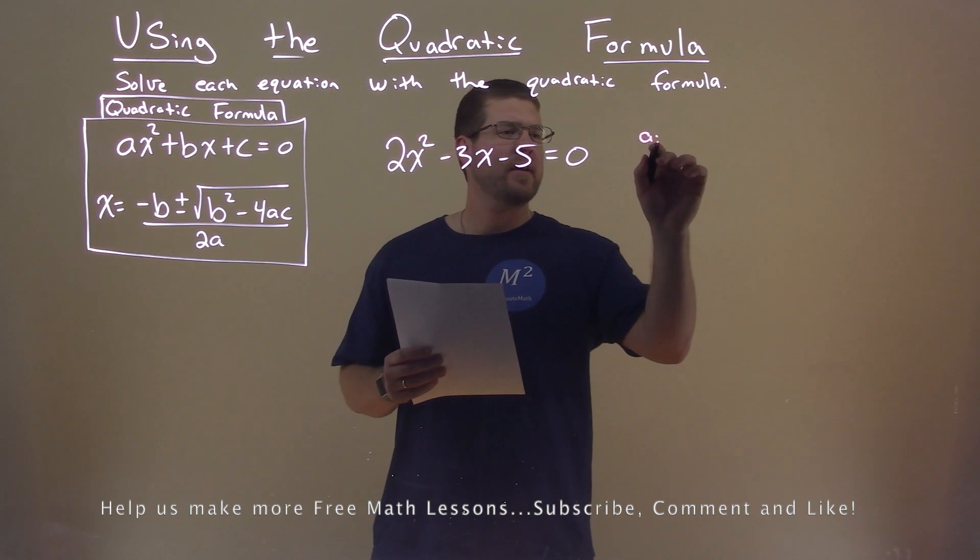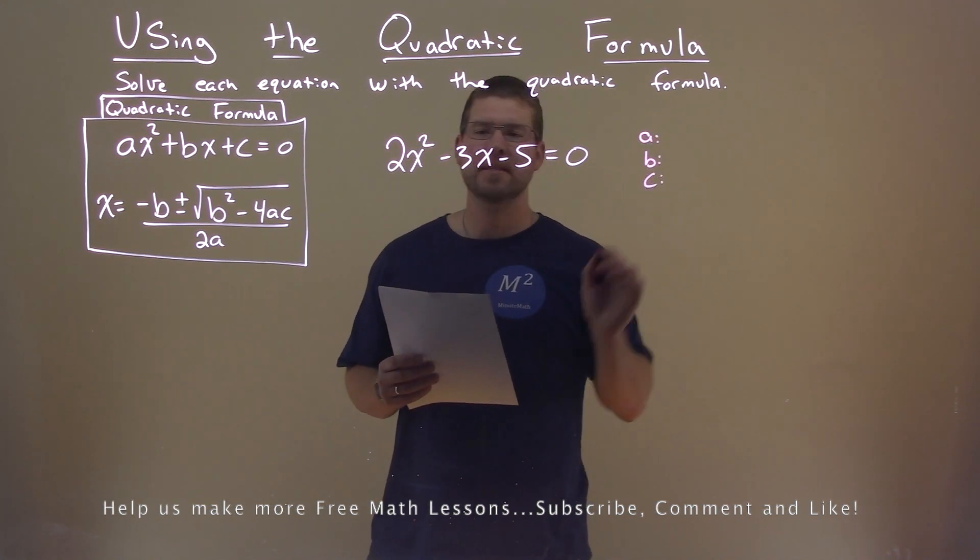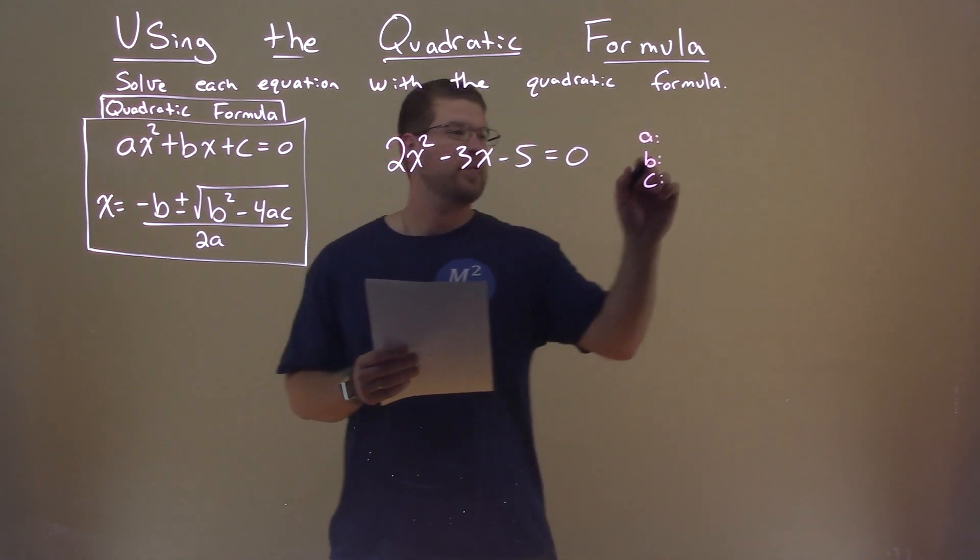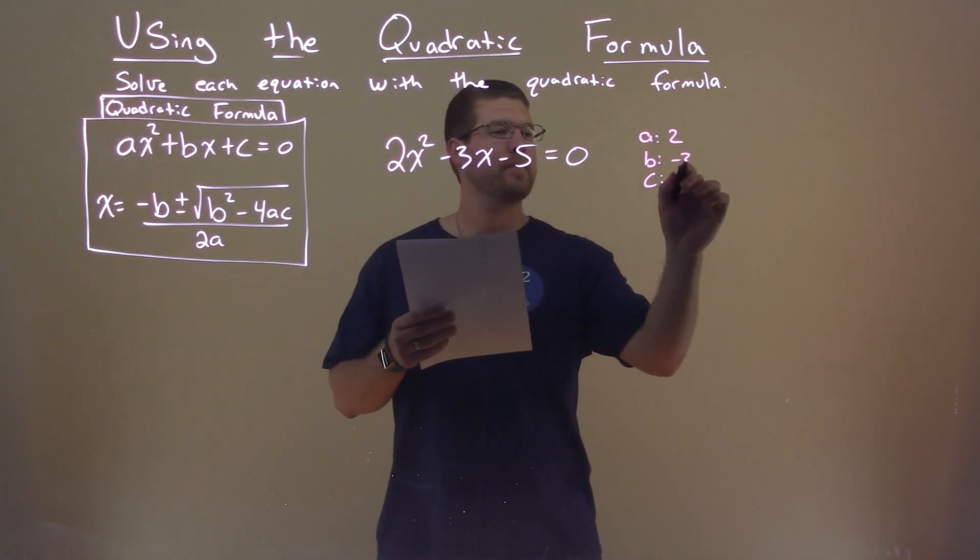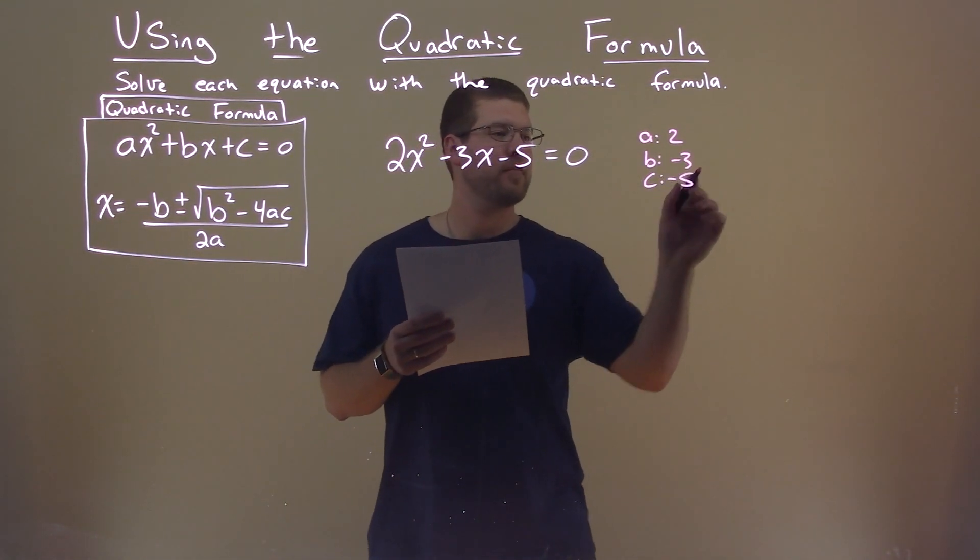Let's find my a, my b value, and my c value first. a is 2, b is negative 3, and c is negative 5.